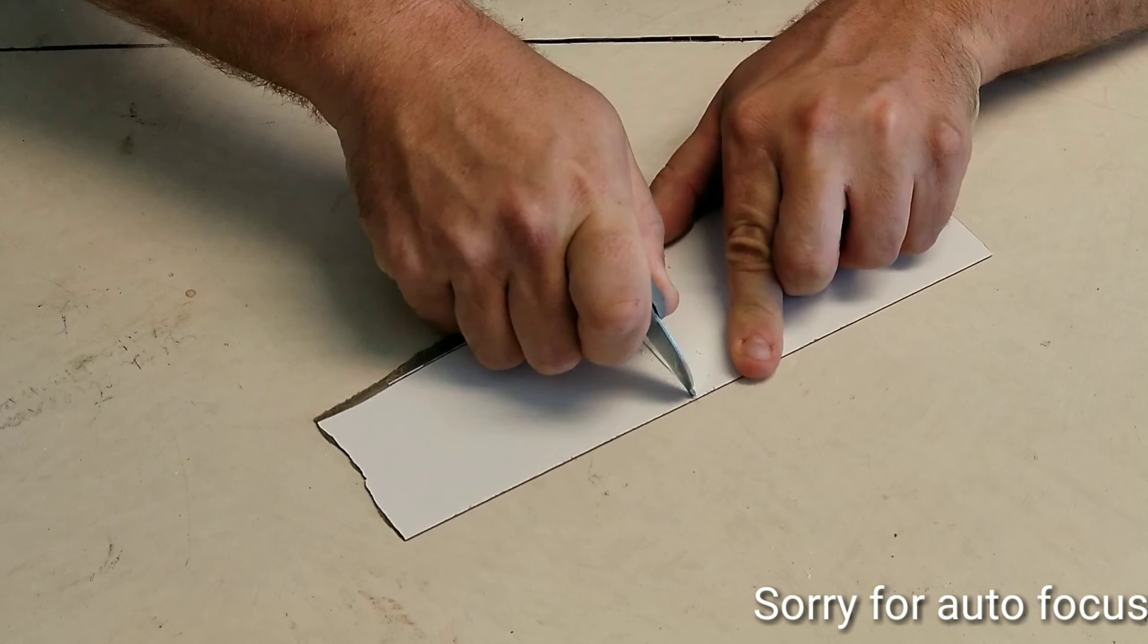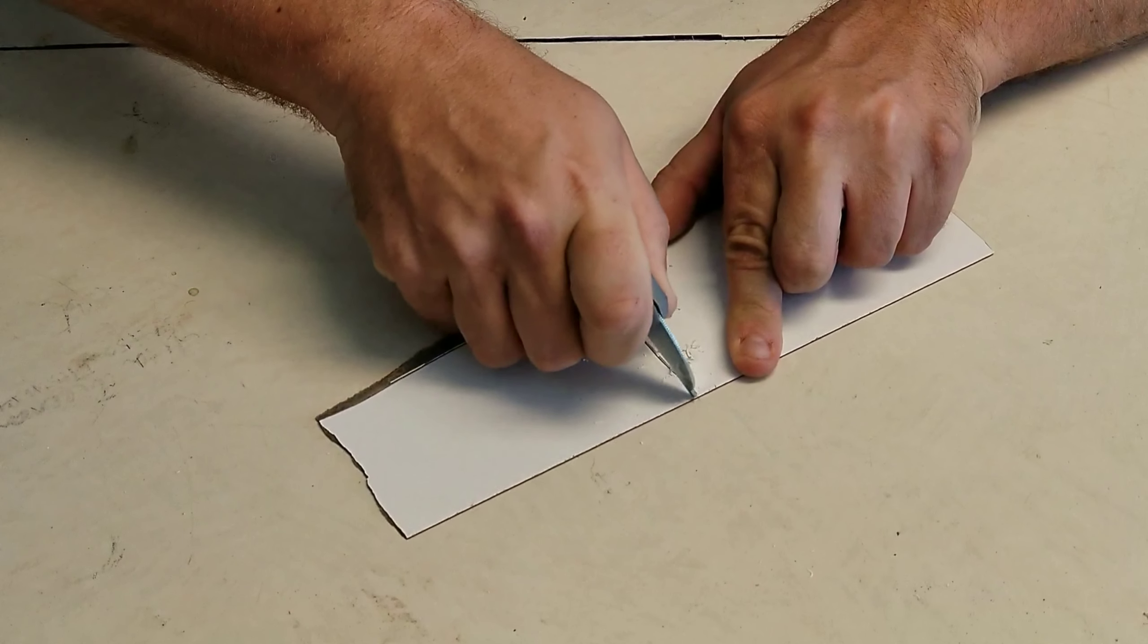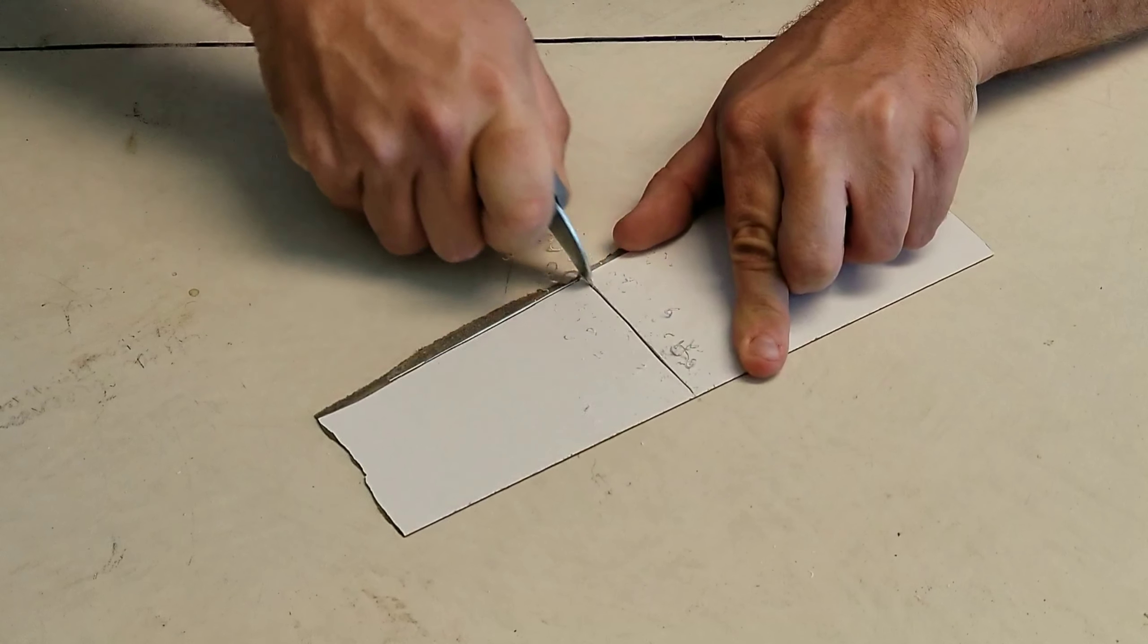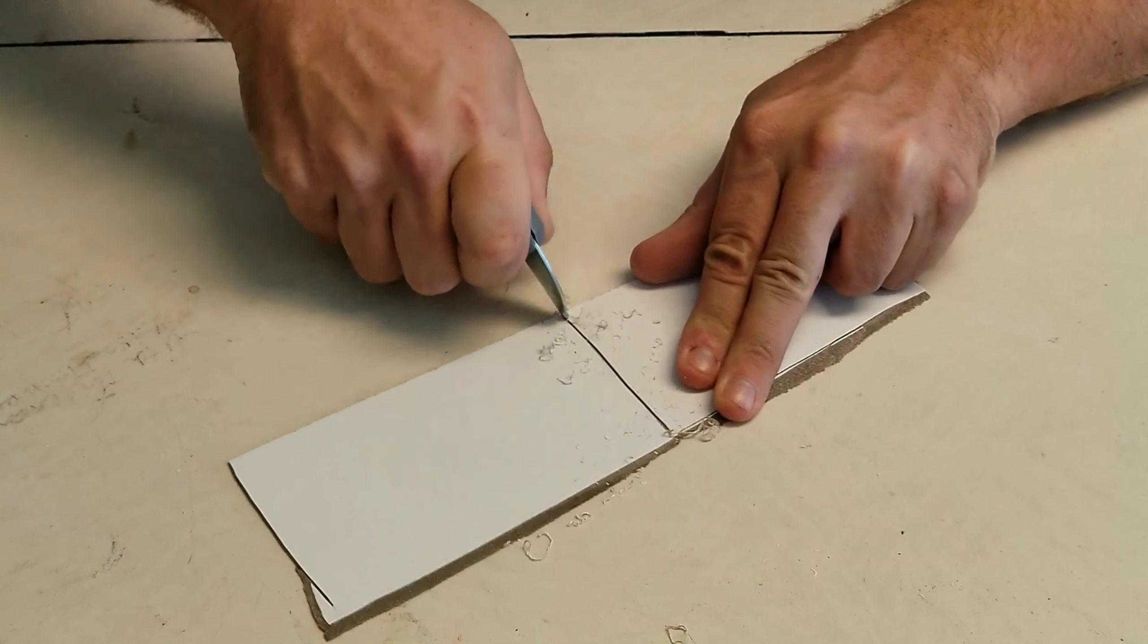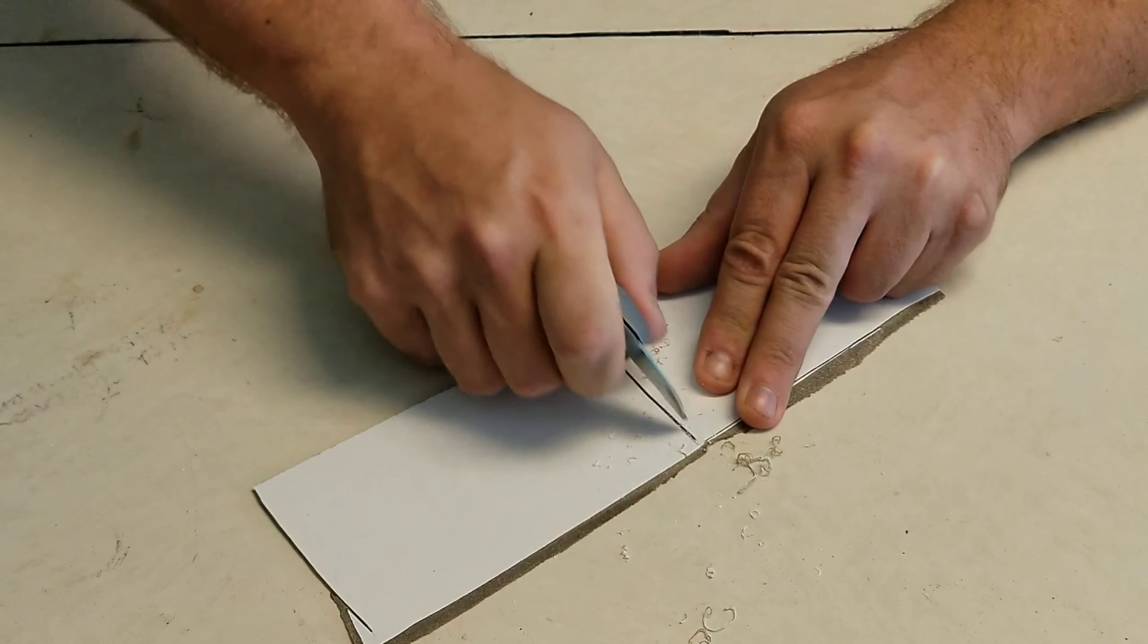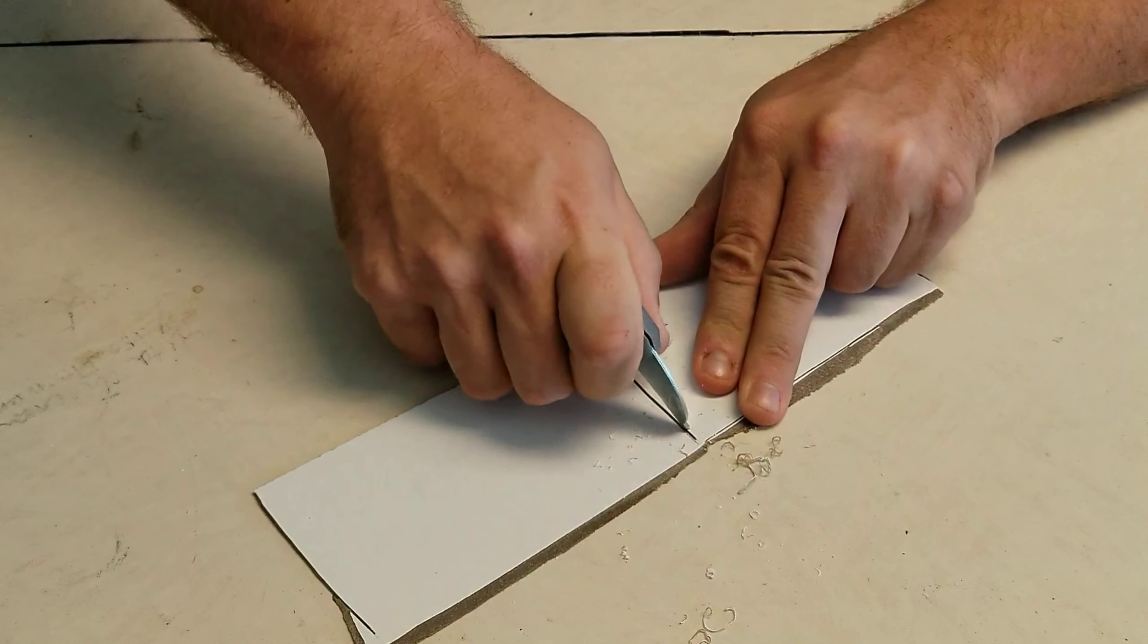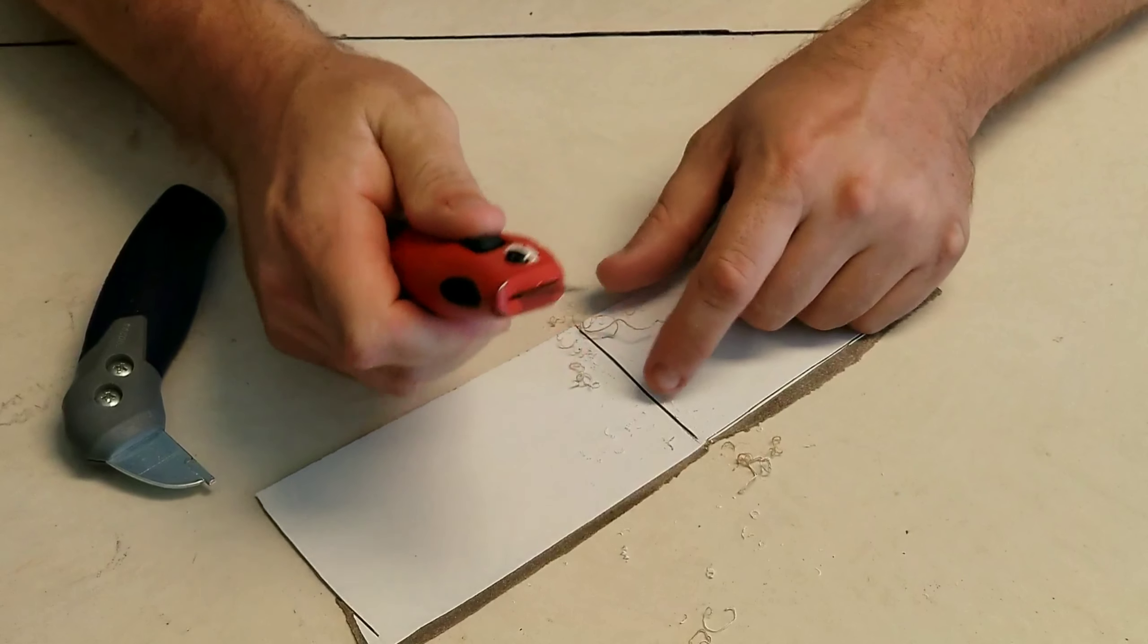You go over it several times. I'll just flip it around here, but you won't be able to do that when you're working. You can see it's taking away the material little by little. Razor knife doesn't work like that.